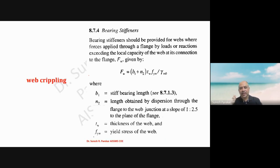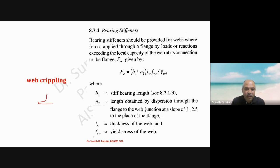Now for web crippling: the web buckles at the center, as we know from column behavior — maximum deflection occurs at center. But crippling occurs at the junction of web and flange, because the concentrated load is suddenly transferred from the larger flange area to the smaller web area. This sudden transfer can cause crushing at the junction of web and flange.